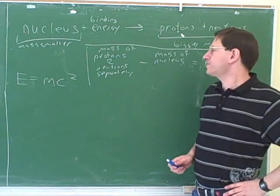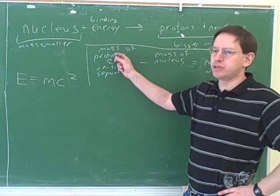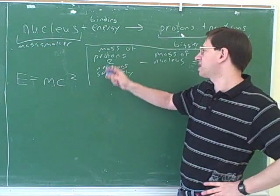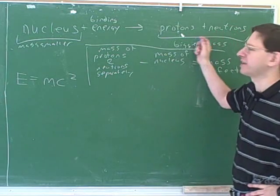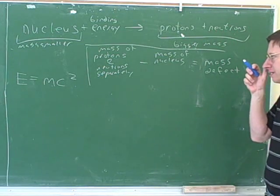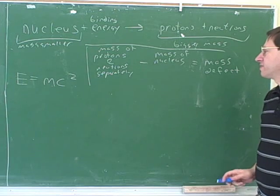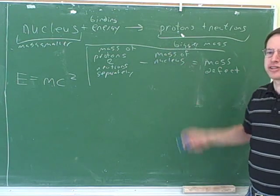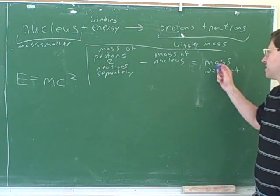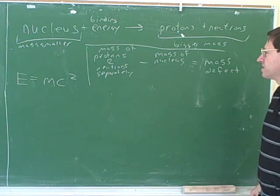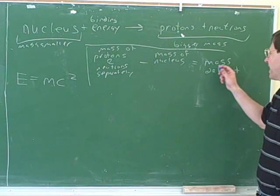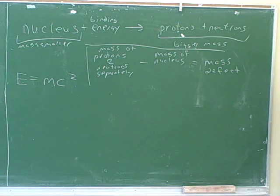In the subtraction, obviously we want to put the bigger number first, so we should put the mass of the protons and neutrons separately first in the subtraction because that's the bigger mass. The mass of everything when it's together in the nucleus is smaller, so that should come second in the subtraction so that the mass defect is a positive number. Physics is weird, but it's not that weird to say that mass can be negative, so this mass defect has to be positive.